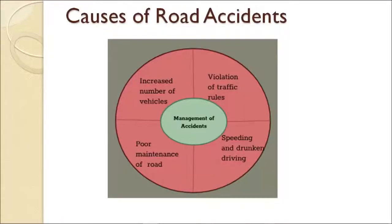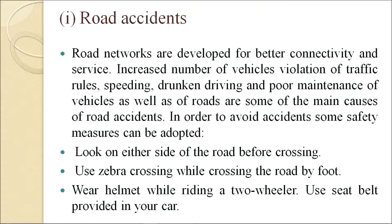The next section is road, rail and air traffic accidents. First, we will look at road accidents. Increased number of vehicles on road, violation of traffic rules, speeding, drunken driving and poor maintenance of roads and vehicles are some of the main causes of road accidents. Road networks are developed for better connectivity and service. In order to avoid accidents, some safety measures can be adopted: look on either side of the road before crossing; use zebra crossings while crossing the road on foot; wear a helmet while riding a two-wheeler.